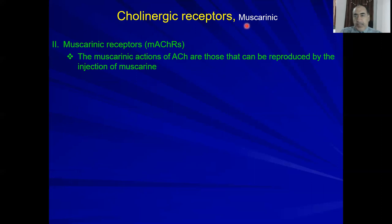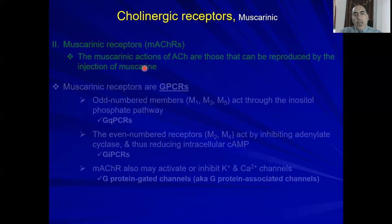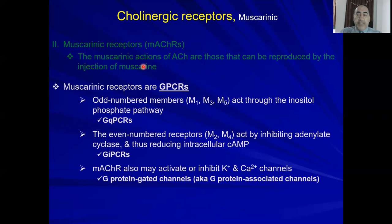The second subtype of cholinergic receptors is muscarinic receptors. They are called muscarinic because the action of acetylcholine on these receptors can be reproduced by the injection of muscarine. Unlike nicotinic receptors, which are ligand-gated ion channels, muscarinic receptors are G-protein-coupled receptors.